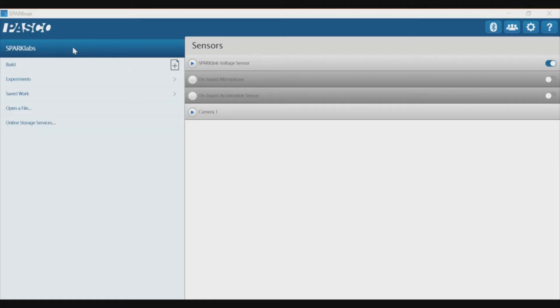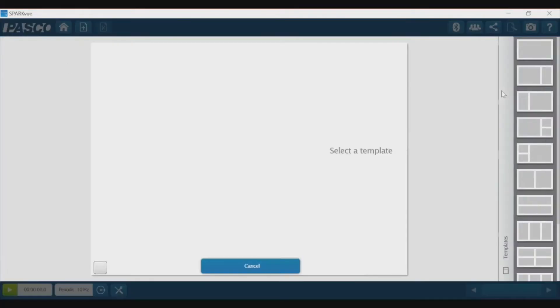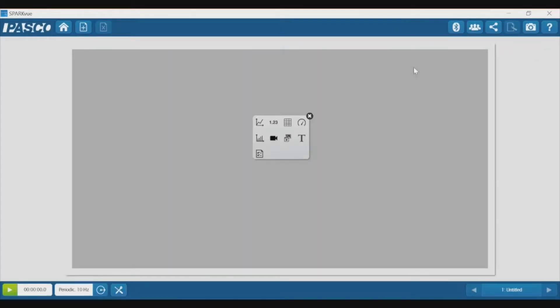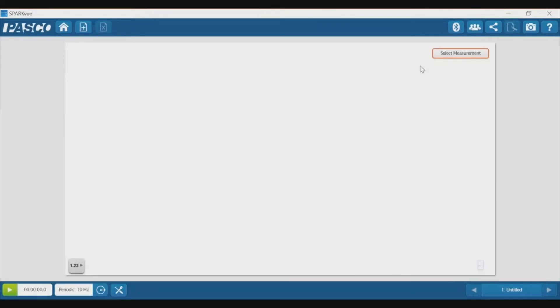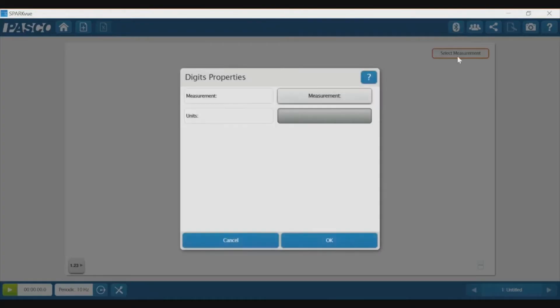In the SparkView program, select Builds to create a new experiment, then select the first option with a single gray box. Click on 123, then click Select Measurement and select Voltage for your measurement.